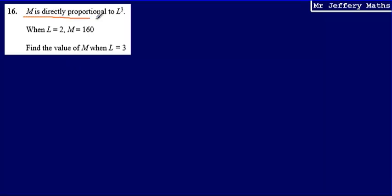So when I'm given a statement about direct proportion, what I want to do to begin with is just write down a statement of proportionality. And what I can say is that M is proportional to, so that symbol there just means proportional to L cubed.